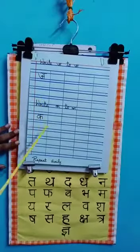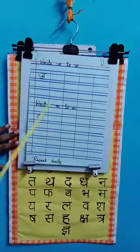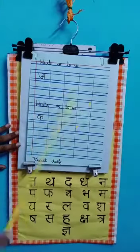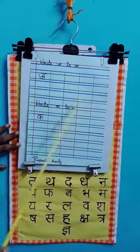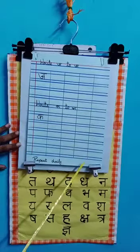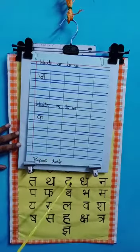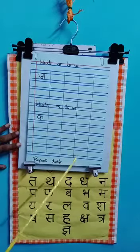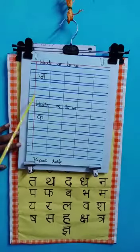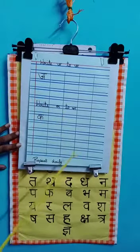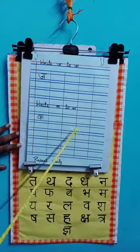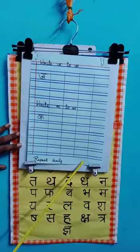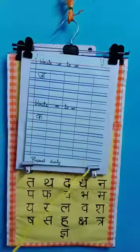Now, children, I want you to write A to Aha every day — A to Aha and Kur to Gya. Repeat it daily. Every day you have to write, otherwise you will forget. Spend some time. Give it 10 minutes a day to practice these letters. Thank you, children.